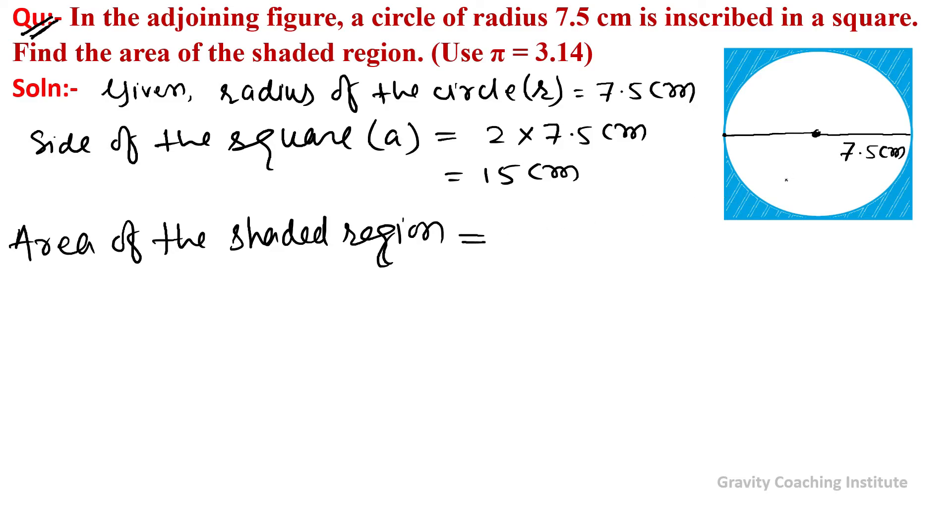Area of the shaded region equals area of the square minus area of the circle. So, area of the square formula is side squared, which is a squared, minus circle's formula pi r squared.